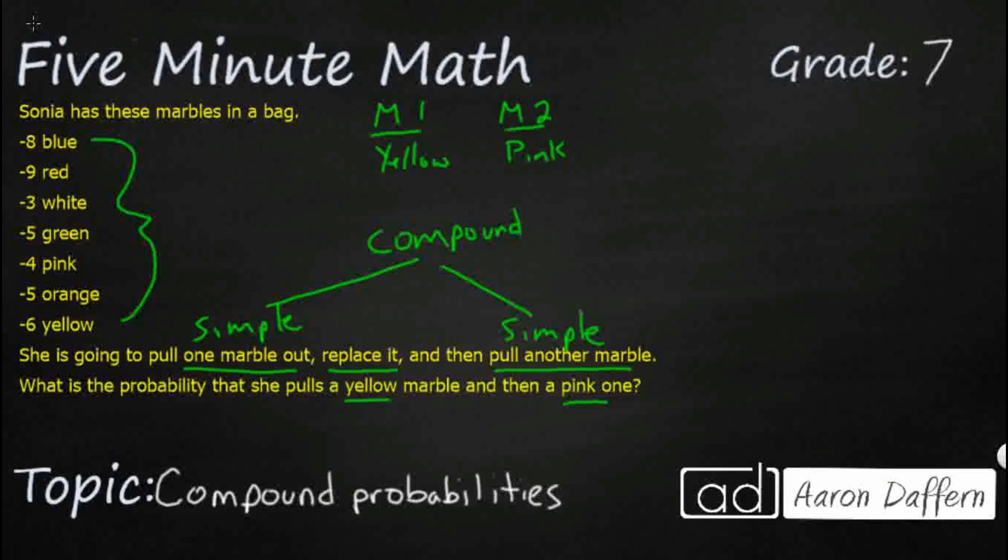So, let's take a look at our probabilities for each, and then figure out how to find this compound probability. First, we need to figure out how many marbles do we have. So, we've got 8, 9, 3, 4, we've got a 5, can't forget that, another 5, and a 6. So, that's a lot of adding. Let me see if I can find some 10s. That's 10, 20, and that's 17, and 3 is another 20, so we're going to call it 40.